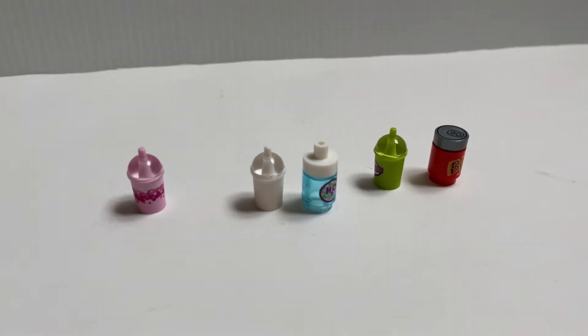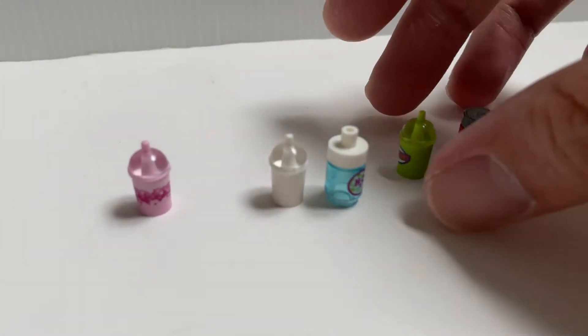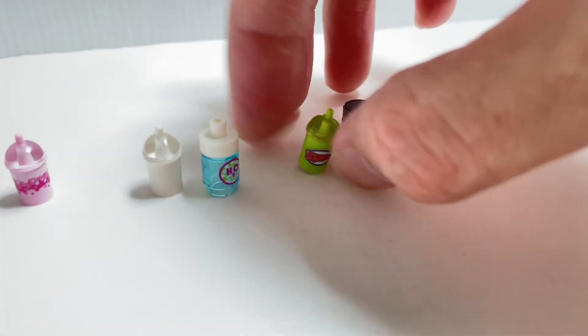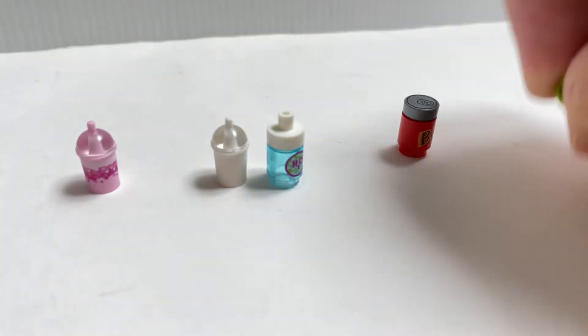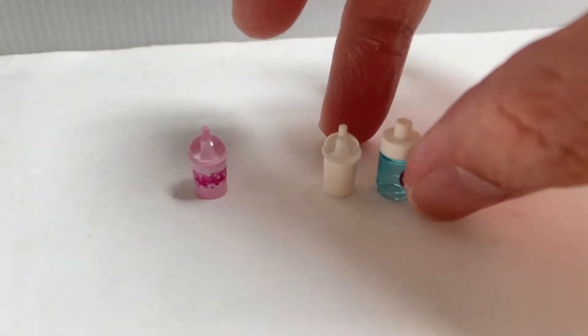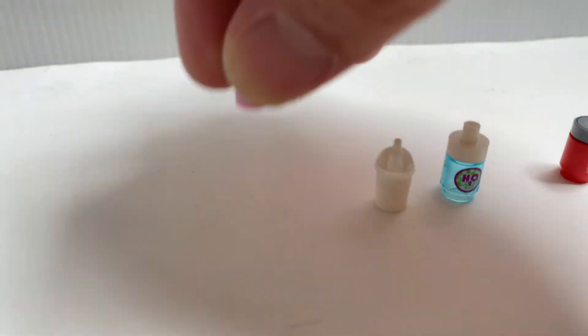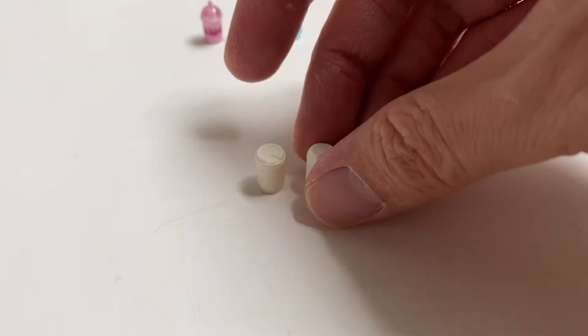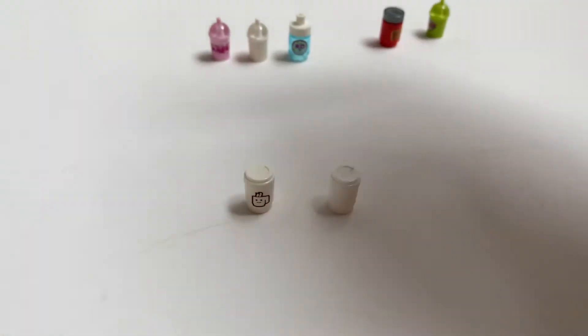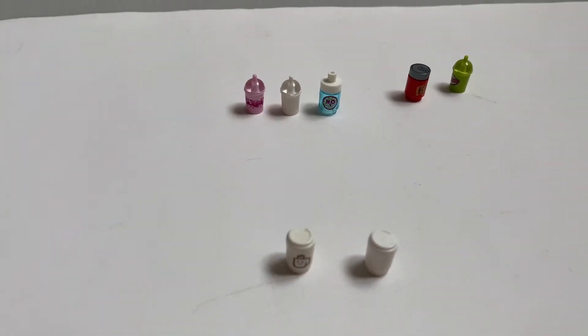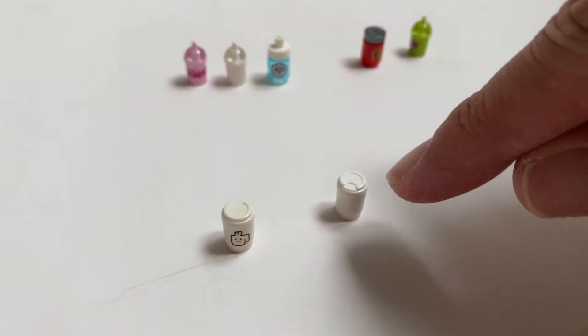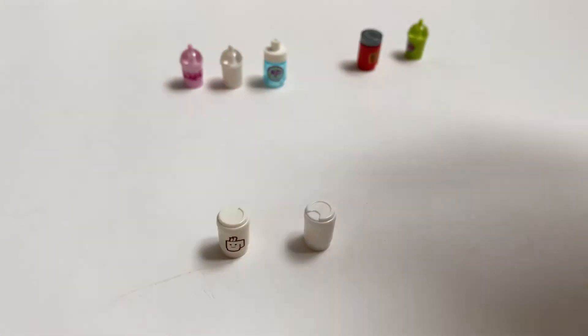And throughout the years, there are also various beverages. So you can see from the Simpson theme, you've got the Duff can and also the Squishee drink. And from the collectible minifigures, you've got bubble tea from the Ninjago movie minifigures. And also a Powerade water bottle. There's also this takeaway coffee cup. So the one with the print is exclusive to the Lego movie collectible minifigures series. And from other Lego themes, you get this generic, unprinted takeaway coffee cup.